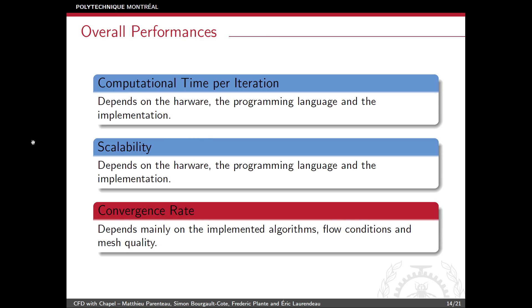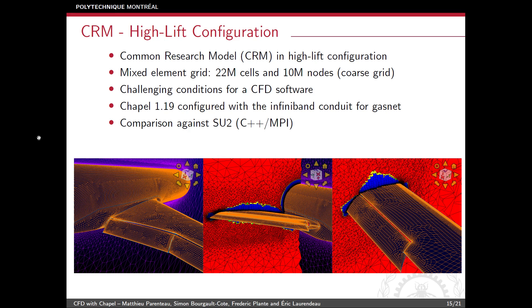In terms of overall performance, we typically look at three criteria for CFD software: computational time per iteration, scalability, and convergence rate. The convergence rate depends more on the implemented algorithms than the hardware, but it is still a critical indicator of what performance the code can achieve.